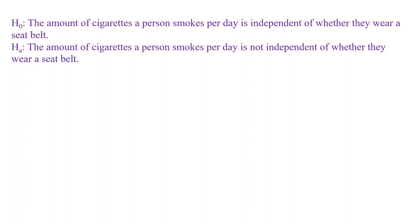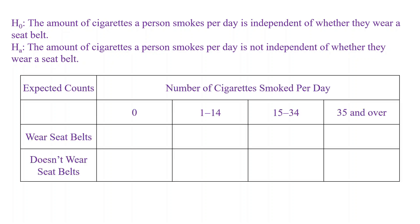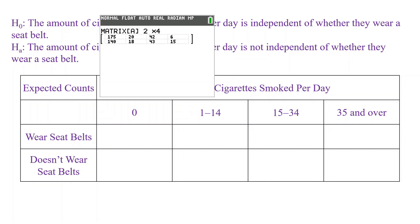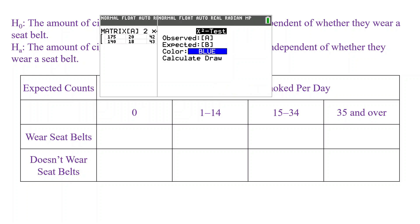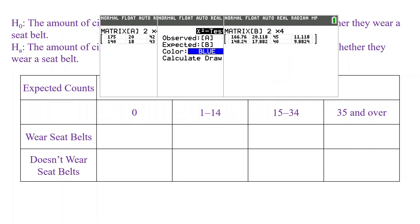This is an association slash independence test because a single random sample of 459 people was taken and then asked two questions. You can use either independent or association language for your hypotheses—both are acceptable. After stating your null and alternative hypotheses, calculate the expected counts. You can do this by hand, but using the calculator with matrices is efficient: enter the observed counts as a 2×4 matrix in Matrix A, run the chi-squared test, and store the expected counts in Matrix B. Then you can read off all the expected counts from that 2×4 matrix.